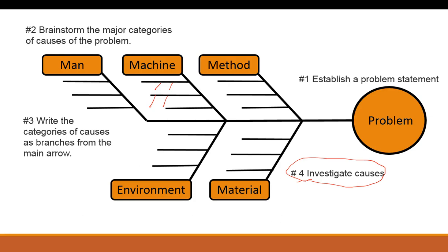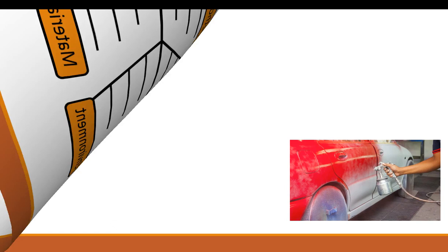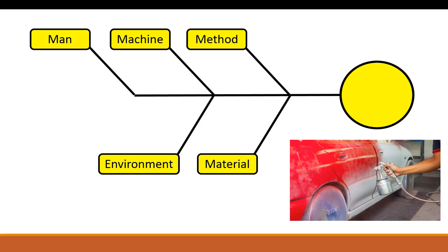Let's look at an example — one of the best ways to get acquainted with an Ishikawa diagram. We have a guy painting a car. Let's say our organization runs a shop that paints cars for customers. They bring in their product, some body work is done, we paint the car, and it should look good as new. But we're having customers give us complaints — the paint's too thick, too tacky, not being applied appropriately. So we come up with our Ishikawa diagram and we establish a problem statement: the paint coating is too thick and too tacky.